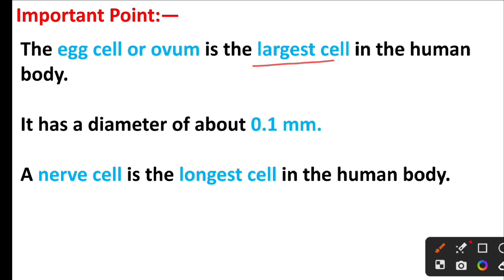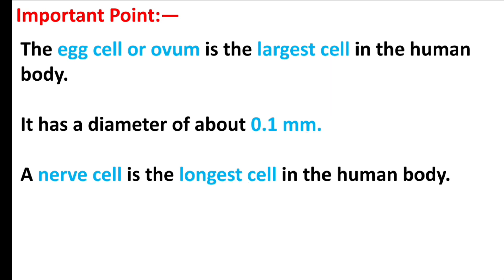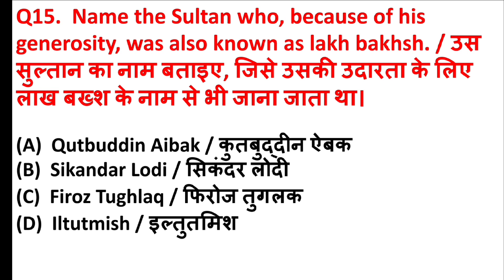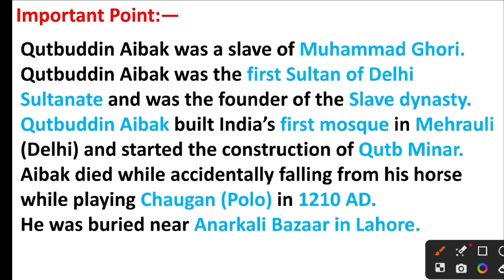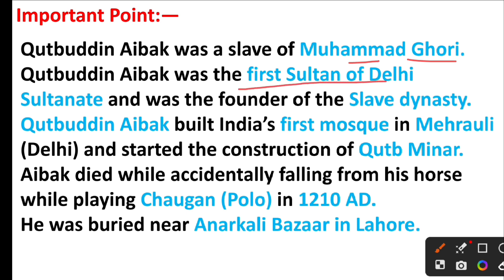The horizontal rows in the modern periodic table are called — ? The right answer is option D — Periods. The horizontal rows of the periodic table are called periods, and the vertical rows are called groups. There are seven periods and 18 groups in the modern periodic table. Which is the largest cell in the human body? The right answer is option B — the egg cell. The egg cell or ovum is the largest cell in the human body, with a diameter of about 0.1 millimeter. The nerve cell is the longest cell in the human body.